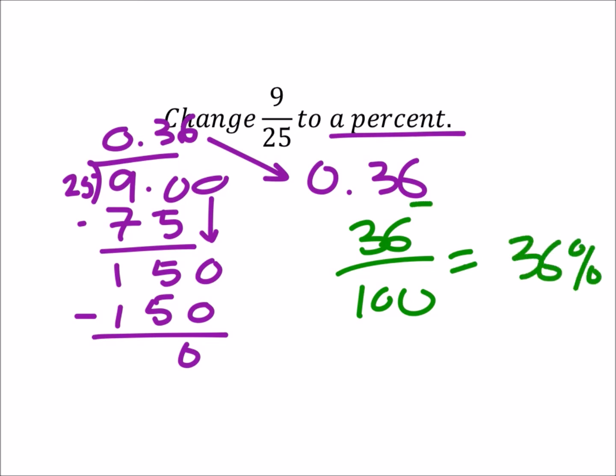Others of you noticed that because the 6 was in the hundredths position, some of you would just move the decimal over twice, making that, again, 36%. It's up to you.